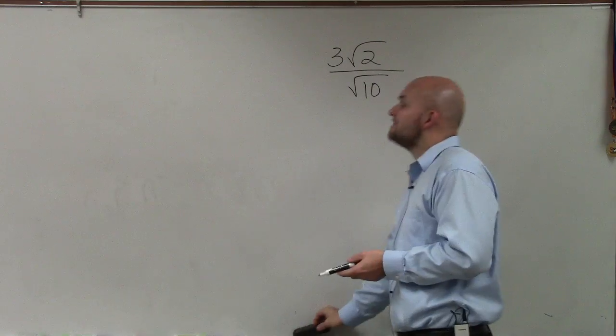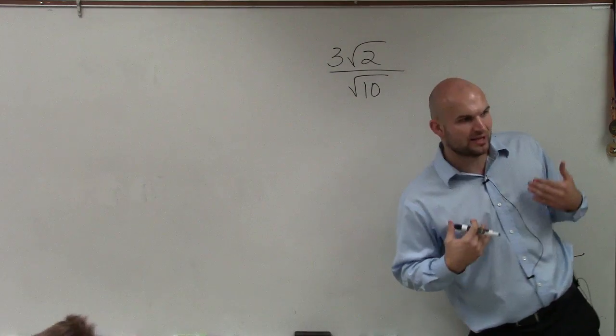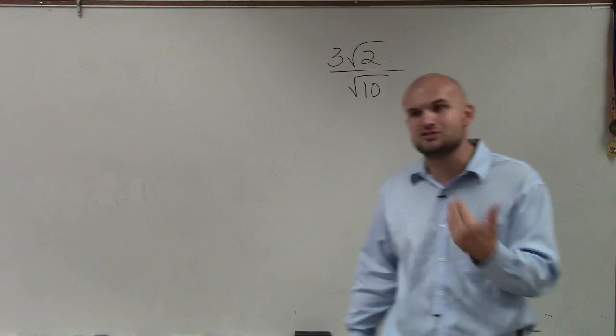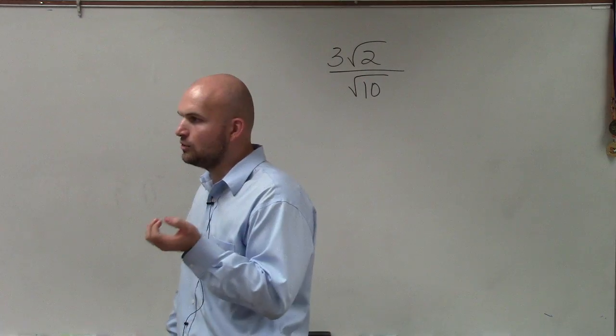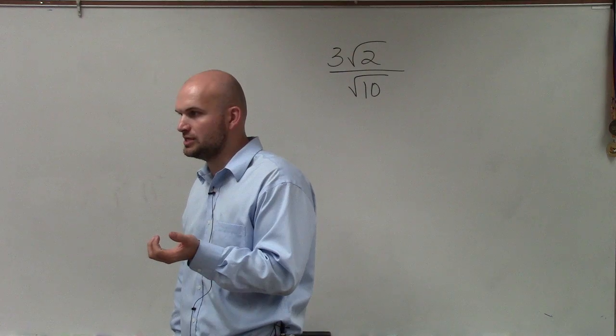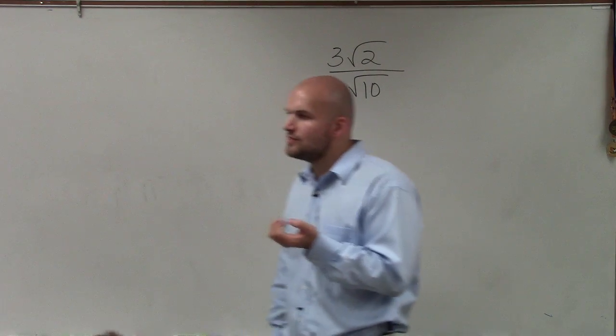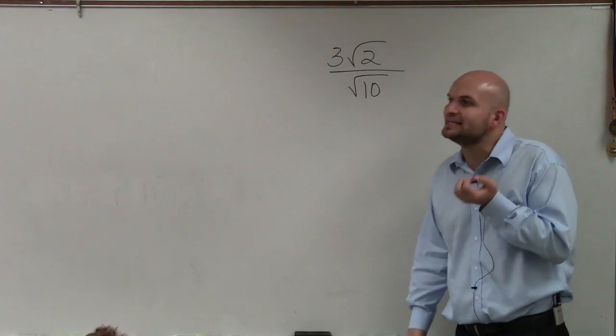I have 3 times the square root of 2 divided by the square root of 10. Now, remember what we discussed. When you can't take the square root of a number and get an integer, then those numbers are what we call irrational.